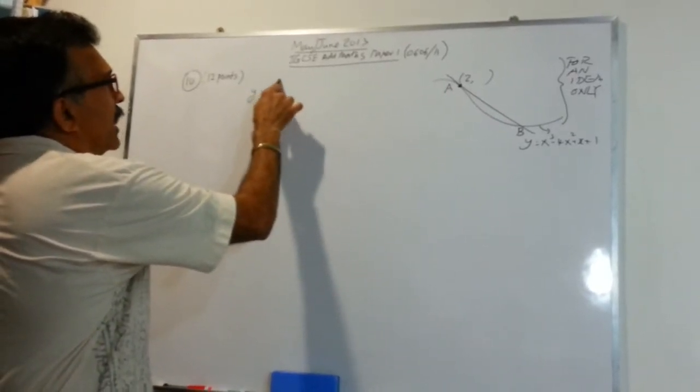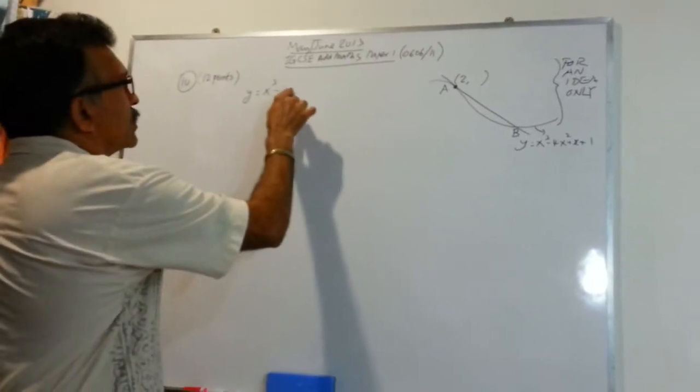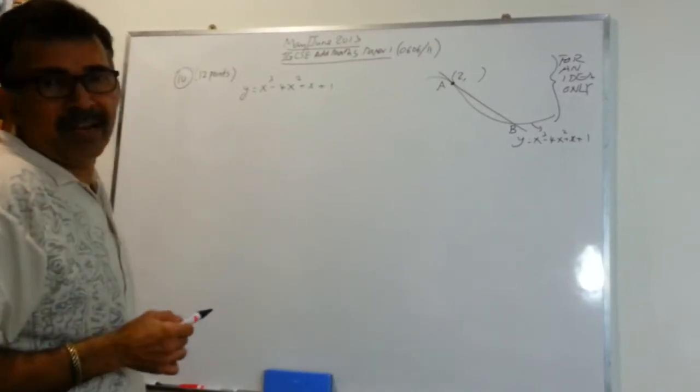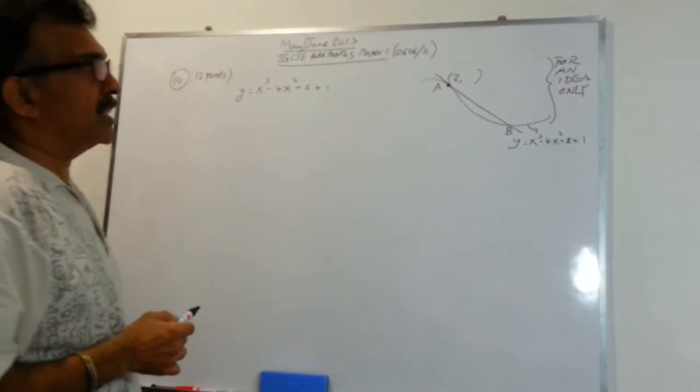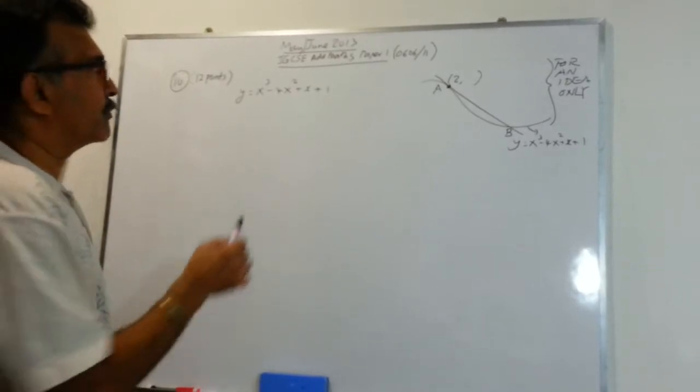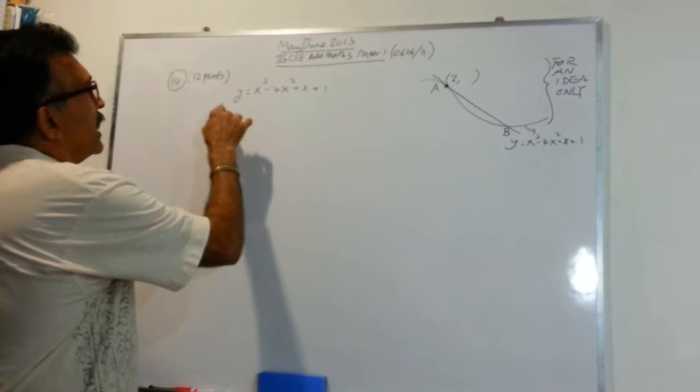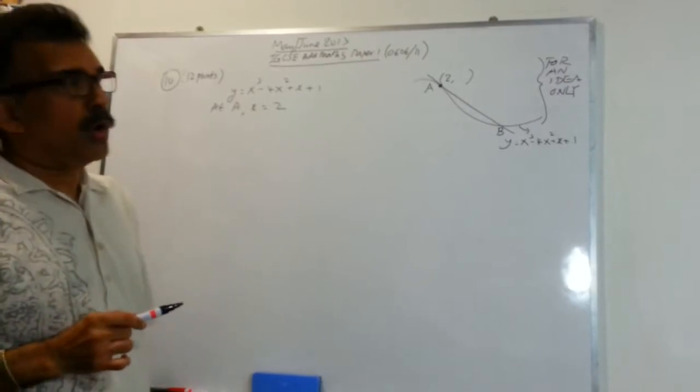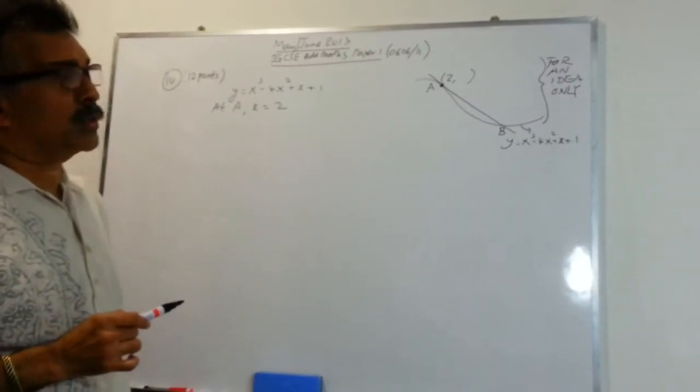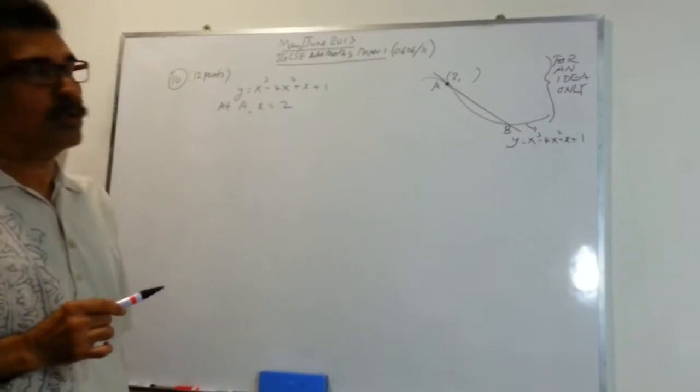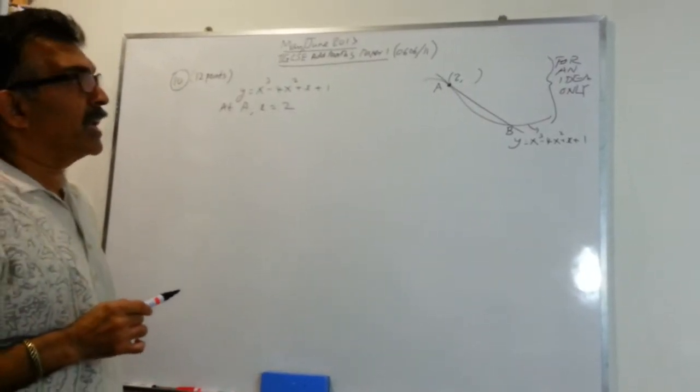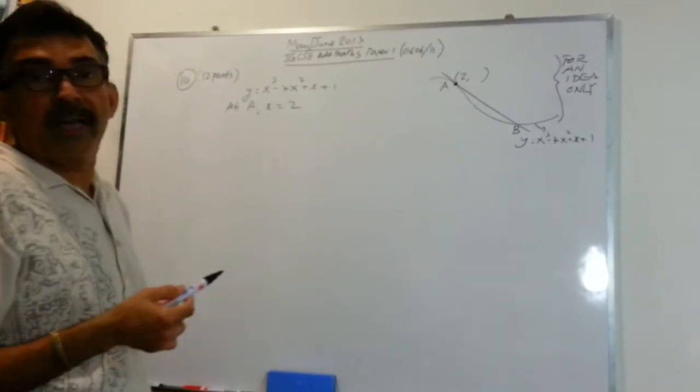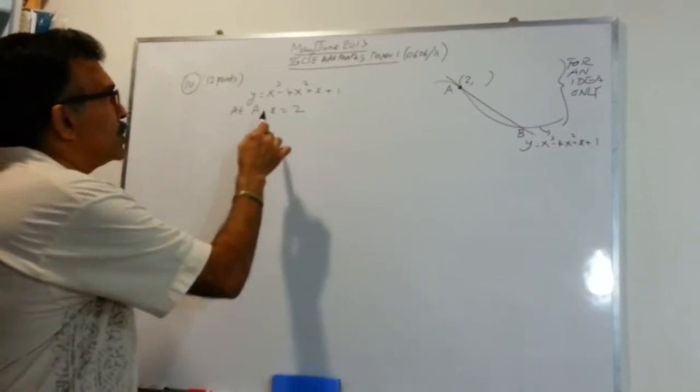We are given y equals x cubed minus 4x squared plus x plus 1, and we are asked to write the equation of the tangent at a point A. And they gave you at A, x equals 2. So what are we asked to do? We are asked to write the equation of the tangent to the curve at the point A, where the x coordinate is 2. So before anything else, let's go ahead and find the y coordinate at A. So when x equals 2,